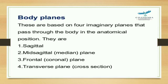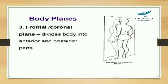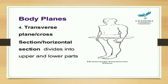Body planes are based on four imaginary planes that pass through the body in the anatomical position. They are the sagittal, coronal, and transverse planes. The sagittal plane divides the body into right and left halves; the mid-sagittal plane divides it into two equal halves. The coronal plane divides the body into anterior and posterior parts. The transverse plane, also called the axial, cross-sectional, or horizontal plane, divides the body into upper and lower parts.